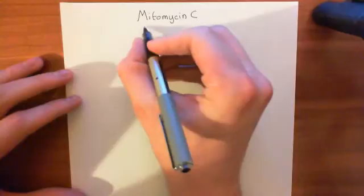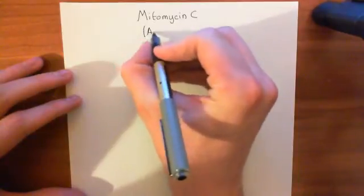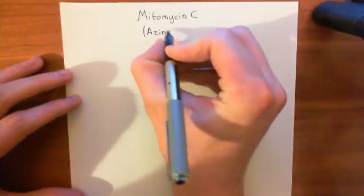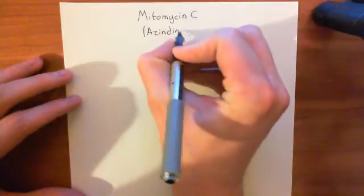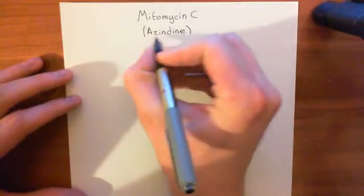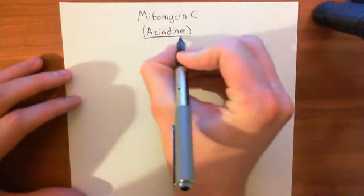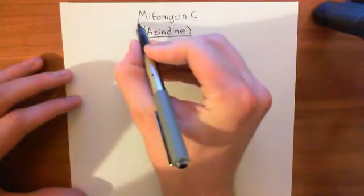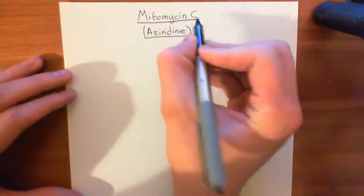So mitomycin C, which is an example of an aziridine. I will explain exactly what that means in a moment. Now, firstly, mitomycin C is used as an anti-tumour drug. It is used to kill cancer cells.